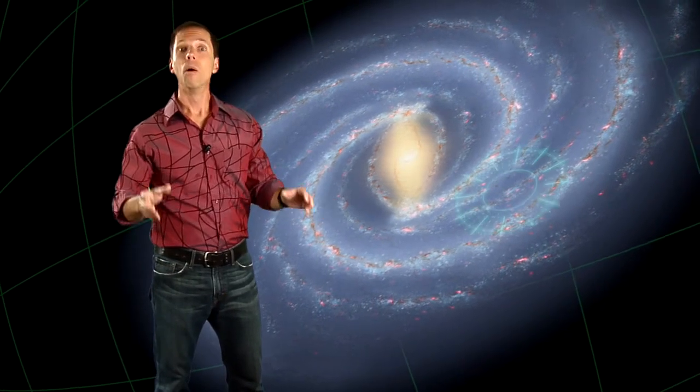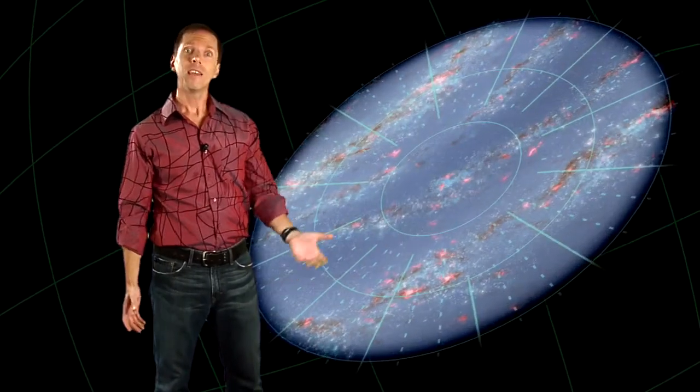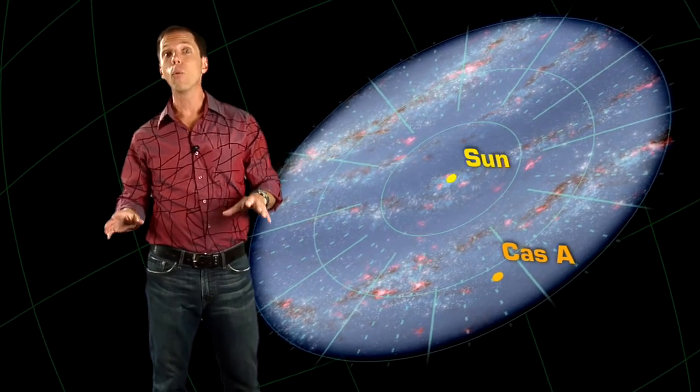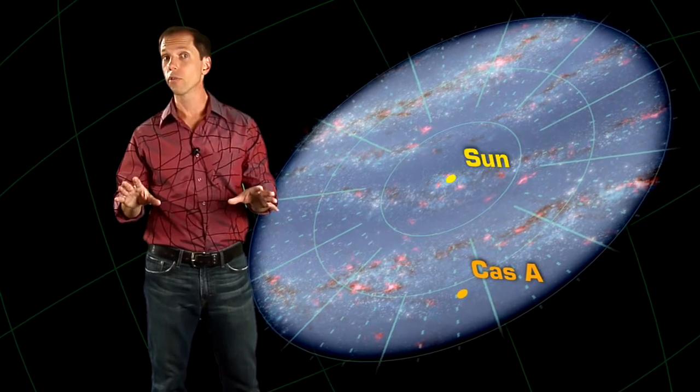To get to what's happening, we have to remember that light is fast. But in such a huge galaxy, it still takes a while for it to get anywhere. Cass A is 11,000 light years away, which means that we're seeing it today the way it was 11,000 years ago. But that's only part of the story.